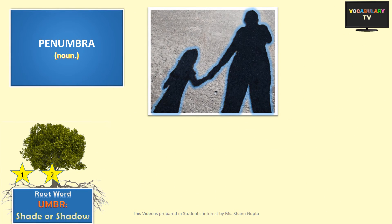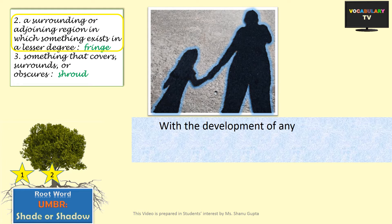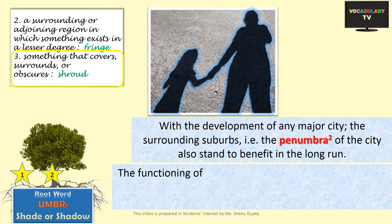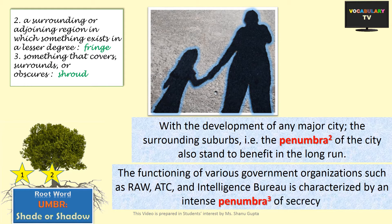In related meanings, the word penumbra can also mean a surrounding or adjoining region in which something exists in a lesser degree — i.e., a fringe. For example, with the development of any major city, the surrounding suburbs — the penumbra of the city — also stand to benefit in the long run. It can also mean something that covers, surrounds, or obscures — i.e., a shroud. For example: In India, the functioning of various government organizations such as RAW, ATC, and Intelligence Bureau is characterized by an intense penumbra, or shroud, of secrecy.